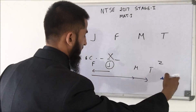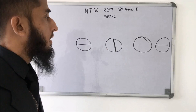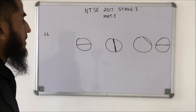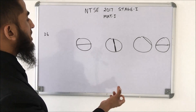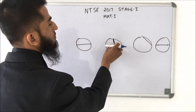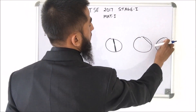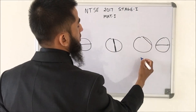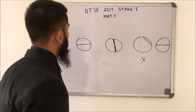In the next odd-one-out question, it is easy to identify that we have pairs of halves — two halves, two halves, and two halves — but one option does not have equal halves. So that unequal one is the odd one out.